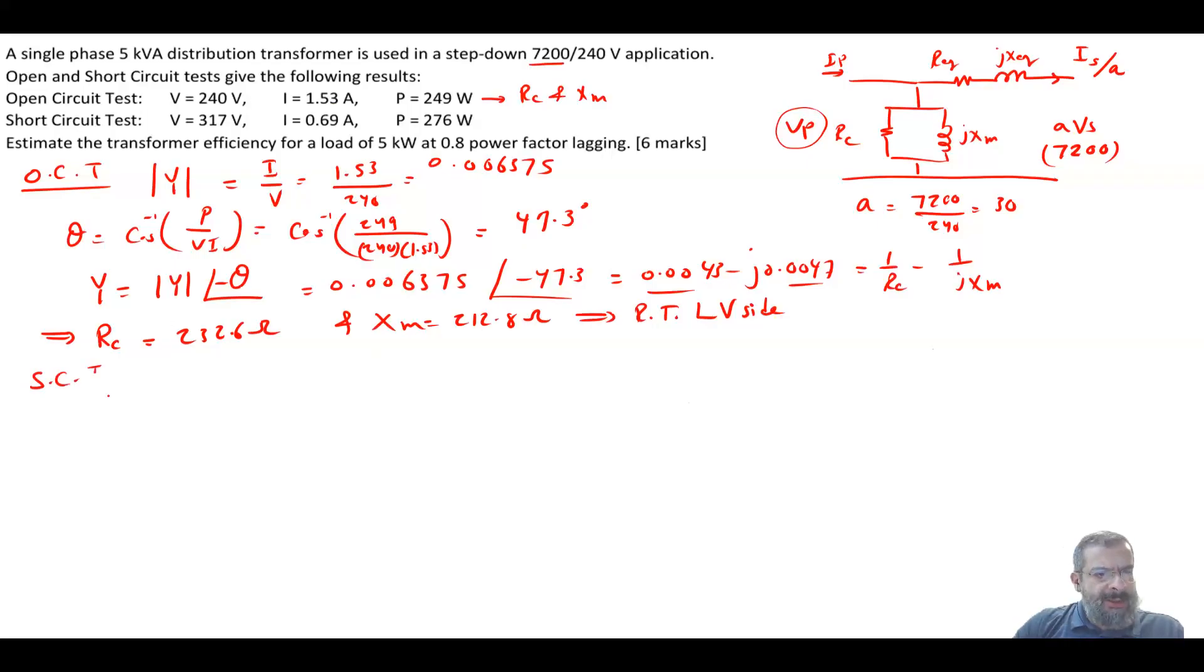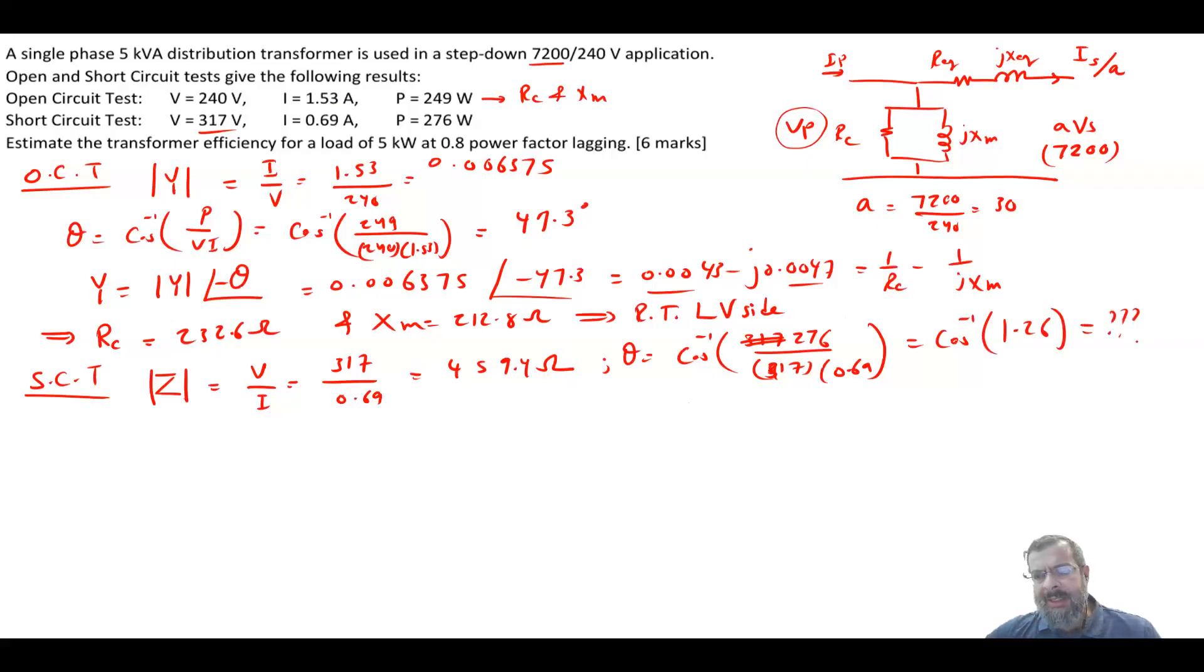Now let's go for the short circuit test. Your Z magnitude is equal to V over I. Your voltage is 317 divided by 0.69 and this will give me 459.4 ohm. Then we'll get the theta so that we can spread the Z to the real and the imaginary. So your theta is equal to cosine inverse of the power, which is 276 divided by 317 times 0.69. And this will give me cosine inverse of 1.26 and this is not defined. Cosine cannot be more than one. So that is a mistake.